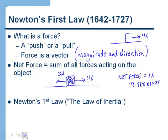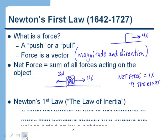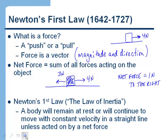We're now ready to look at Newton's first law, which is called the law of inertia. Newton's first law says a body will remain at rest or will continue to move with constant velocity in a straight line unless acted on by a net force. So if the net force is zero, the object stays at rest or keeps moving with constant velocity in a straight line.